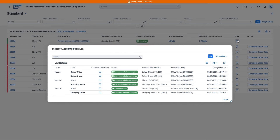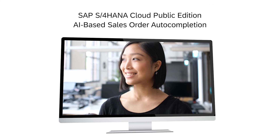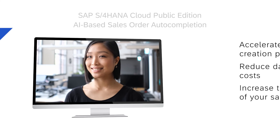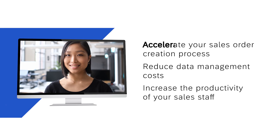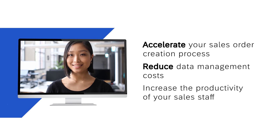These changes are now logged and can be easily viewed under Display Auto Completion Log. Your sales order is now complete and ready for processing. By using the AI-based Sales Order Auto Completion in SAP S4HANA Cloud, you can accelerate your sales order creation process, reduce data management costs, and increase the productivity of your sales staff.